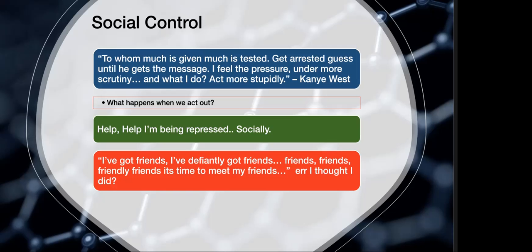Let's get to social control. As Kanye West put it: 'To whom much is given, much is tested — get arrested, guess what? Until he gets the message, I feel the pressure, under more scrutiny. And what do I do? I act more stupidly.' That song talks about how no matter how far we go, we can still be impacted by how we act. So what happens when we act out? We get repressed, pushed back, put into formal or informal sanctions.